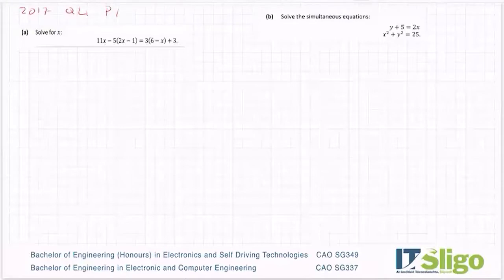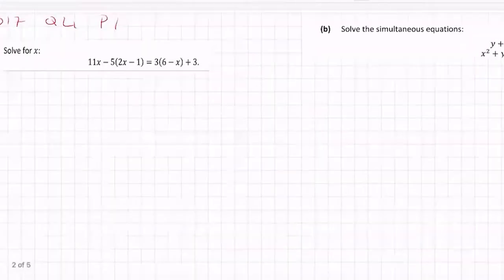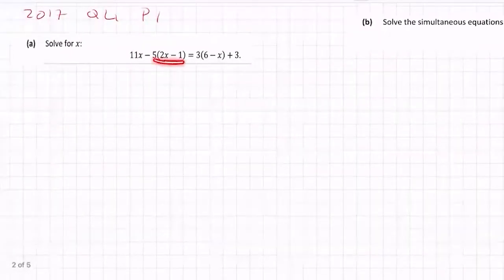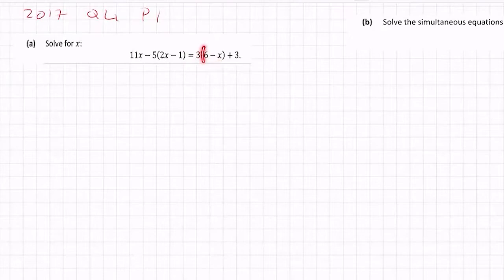11x minus 5 bracket 2x minus 1 equals 3 bracket 6 minus x plus 3. So first things first, when you've got brackets and a number outside them like such, that means multiply. So you multiply 5 by everything in the bracket, and you're finished multiplying by 5 when the bracket closes.